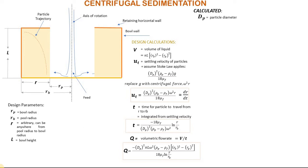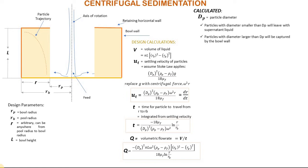Dp is particle diameter, and can be solved using the equation for volumetric flow rate or time. Particles with diameter smaller than Dp will leave with the liquid, and particles with larger diameter than Dp will be captured by the bowl wall.